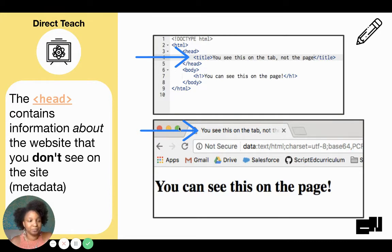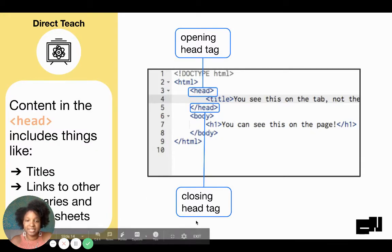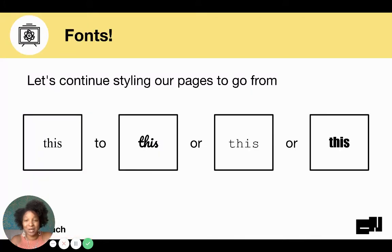The head again contains things we do not see on the page, but it shows up right here in the little tab. We have our opening and closing tags — the closing often has a slash in the front. The content in the head includes the title, links to other things, and we're going to get into fonts. We're going to put something in that head for fonts as well.